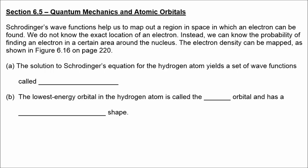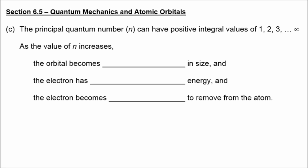On to Section 6.5, quantum mechanics and atomic orbitals. Schrödinger's wave functions help map out a region in space where an electron can be found. We do not know the exact location of an electron; instead, we know only the probability of finding it in a certain area around the nucleus. The solutions to Schrödinger's equation yield a set of wave functions called orbitals. The lowest energy orbital in hydrogen is the 1s orbital, which has a spherical shape. As the principal quantum number n increases, the orbital becomes larger, the electron has higher energy, and it becomes easier to remove.